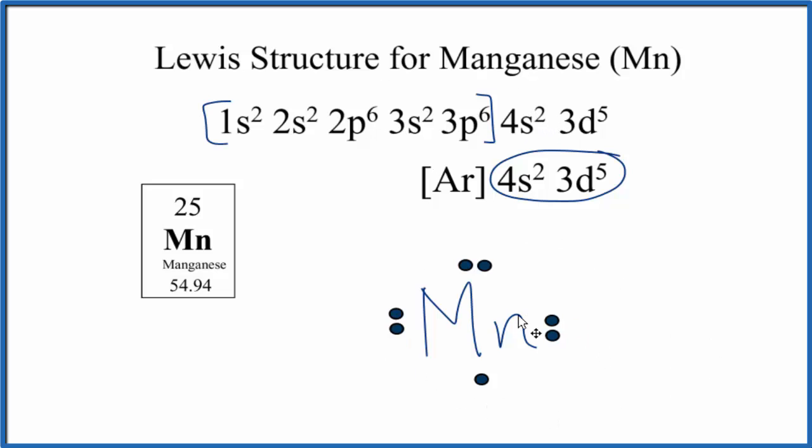This isn't all that useful because manganese can lose some or all of these valence electrons when it forms chemical bonds. It can lose 2, 3, 6, 7, so we really don't get a lot of utility out of writing this here, because being a transition metal, it can lose different numbers of valence electrons.